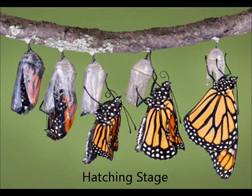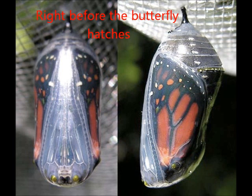The butterfly is hatching here. Once it is completely hatched, it takes one hour for a butterfly to be at its full grown adult size. Right before it is about to hatch, you will see the colors of the wings.